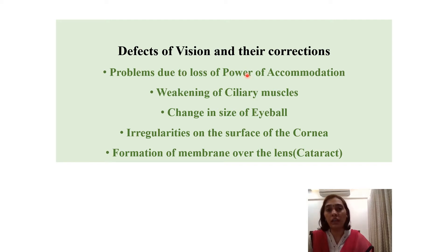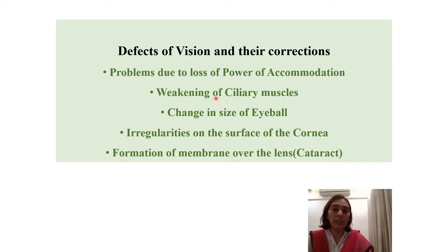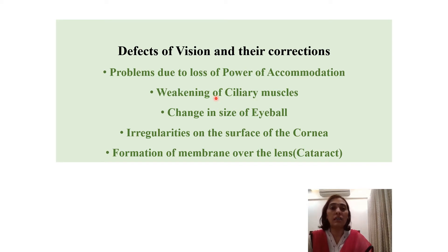As the age of a person advances, this power of accommodation gradually starts becoming weaker and this introduces certain defects. Secondly, weakening of the ciliary muscles — the lens is held in position with the help of ciliary muscles, and they play a very important role in bringing about the change in curvature of the lens. If these ciliary muscles become weak as age advances, the power of accommodation becomes weak and introduces certain defects. Loss of power of accommodation also causes defects.